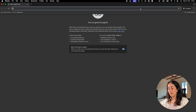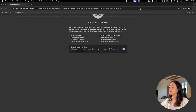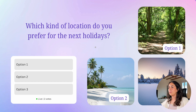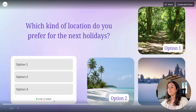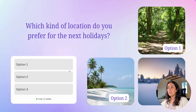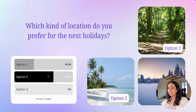Let me show you what others see when they receive the link. I paste the link, hit Enter, and I see a poll: which kind of location do you prefer for the next holidays? Because it's a poll with no submit button, once you click any option your vote is sent immediately and you cannot change it. After voting you can see the percentages and how many people have voted.